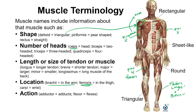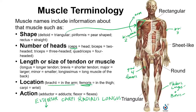Let's do a quick experiment. I'll give you a name of a muscle and I want you to try to make sense of what you see in the name. So we'll go with extensor carpi radialis longus. From this name, we know one of its actions — it's an extensor, so we know it extends. It extends at what area? Carpi refers to the wrist, so this muscle extends at the wrist.